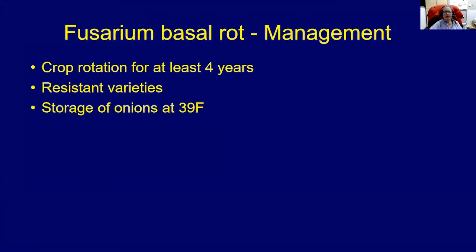Management for Fusarium basal rot includes crop rotation for at least four years if you've had a problem with it — it's a soil-borne fungus that persists in the soil. After four years, you reduce the inoculum enough to grow onions for several more years. There are onion varieties with some resistance to Fusarium basal rot. And storing onions at 39 degrees Fahrenheit or less will reduce the amount of rot in storage if you have infected onions.